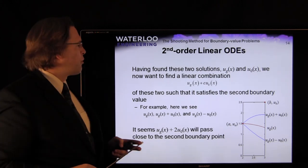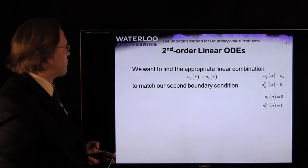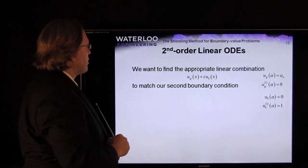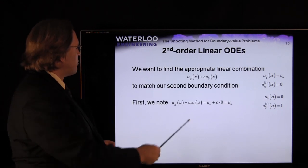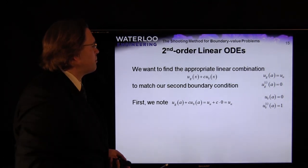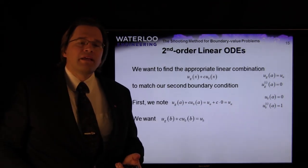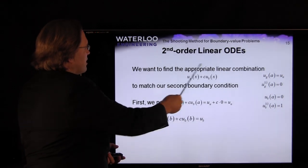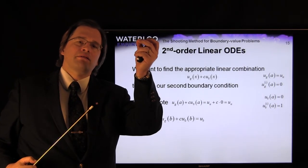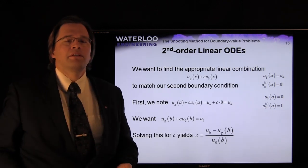To find the exact coefficient c, it is simply algebra. Evaluating the sum u_g + c·u_0 at x = a gives the left-hand boundary value by our initial conditions. We require that evaluating the sum at x = b gives the right-hand boundary value u_b. Solving for c gives us our coefficient directly.